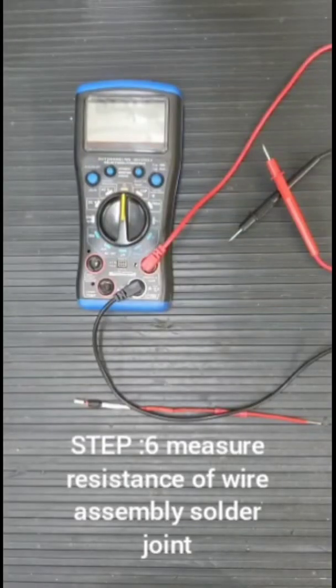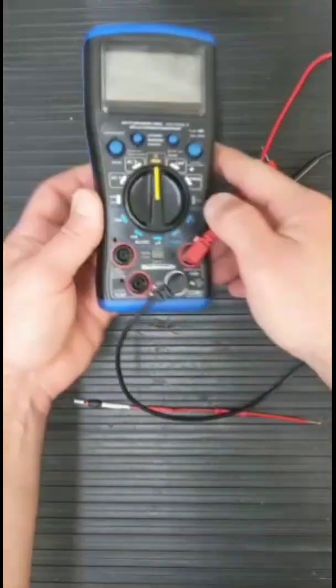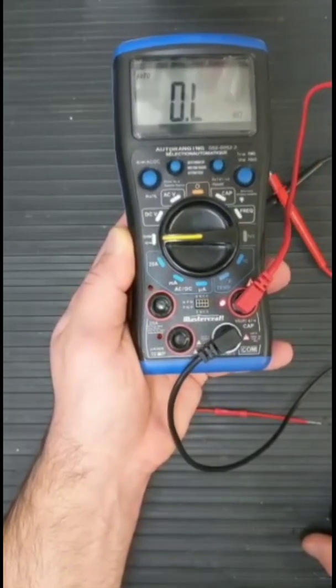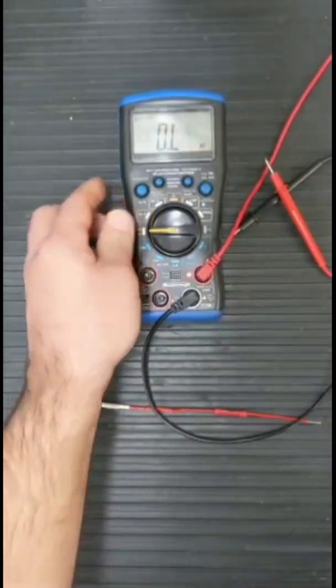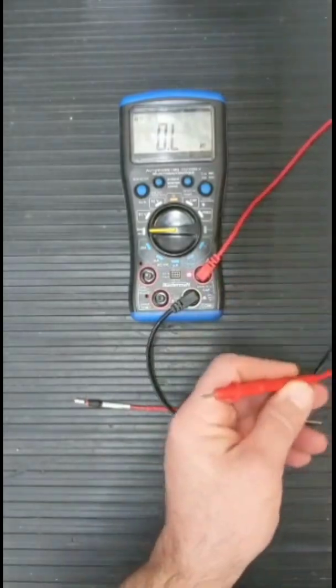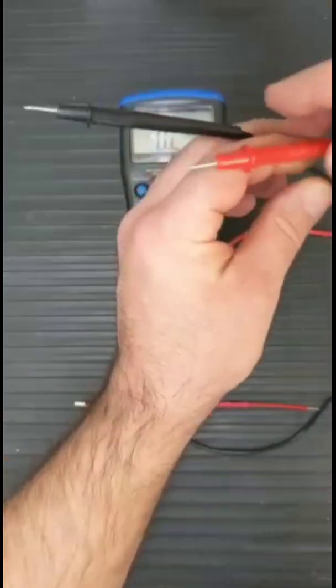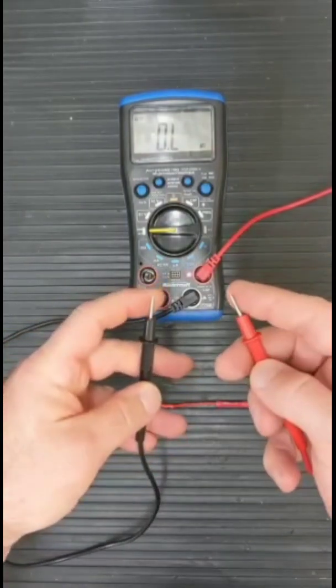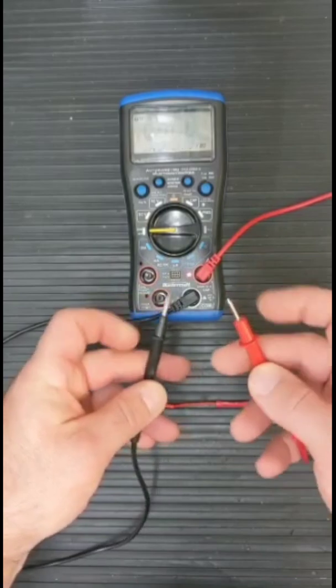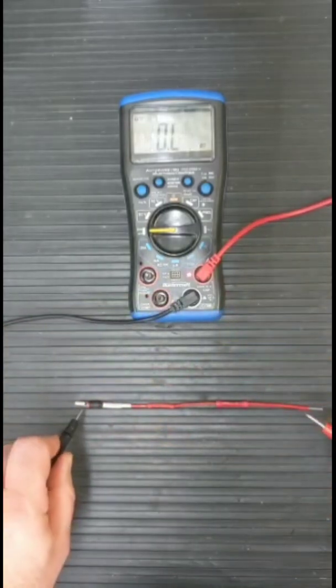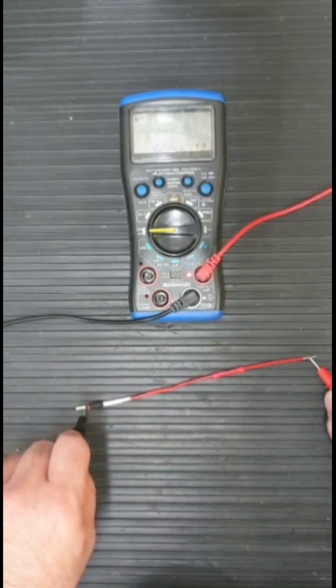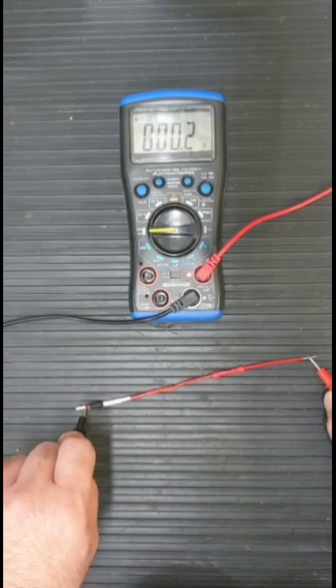We'll now be measuring the resistance of the wire assembly. You want to make sure your meter is set to ohms. Two things you want to make sure of: your wires are not crossed when you're testing resistance, you want to make sure they're both separate. You also don't want to touch the ends with your skin, so make sure your fingers are away from the end of the probes. You're just going to touch one end of the assembly as well as the other end, and you should get a result of less than one ohm.